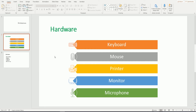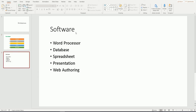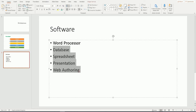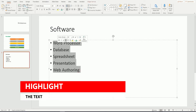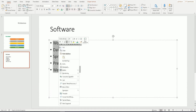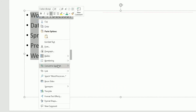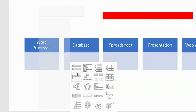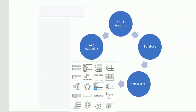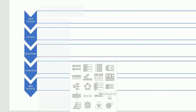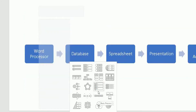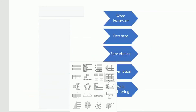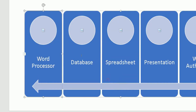Let me do this one more time on the Software slide. I'm going to highlight all the text in the bullet points, then right-click and go to Convert to SmartArt. Choose the SmartArt you want — let me choose a different type this time. I'll choose this one here.